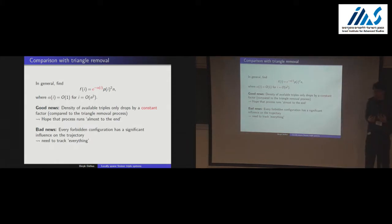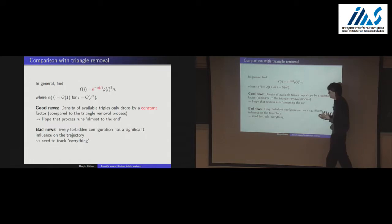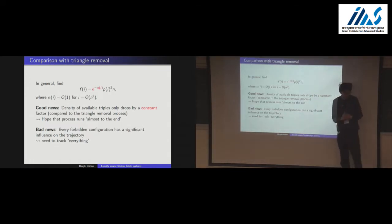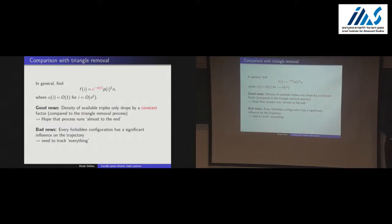The good news is that the density of available triples only drops by a constant factor — it's still large. The hope would be that dividing by a bounded number at each stage doesn't seriously affect how long the process runs. The bad news is that the correction term is not close to 1, so you can't ignore it — you really need to know how many dangerous configurations there are and where they are.